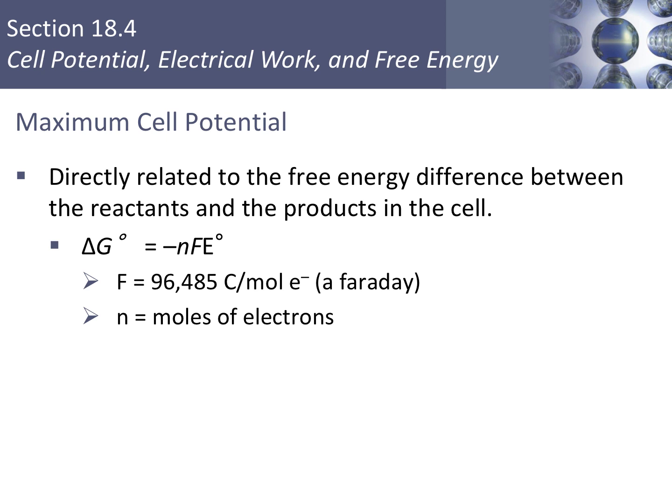The maximum cell potential — the maximum voltage for a cell — is directly related to the free energy difference, delta G, between the reactants and products in the cell. This equation makes a connection between thermodynamics and electrochemistry.